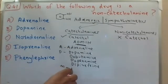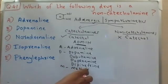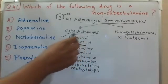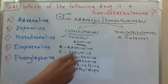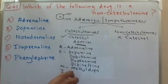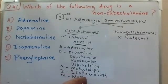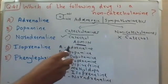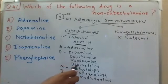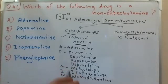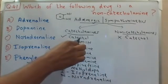M in the mnemonic stands for methyldopa, which also contains the catechol nucleus. I stands for isoprenaline, and N stands for noradrenaline. So to recap the mnemonic ADMIN: adrenaline, dopamine, dobutamine, dopexamine, dipivefrin, methyldopa, isoprenaline, and noradrenaline — all contain the catechol nucleus and are catecholamines.